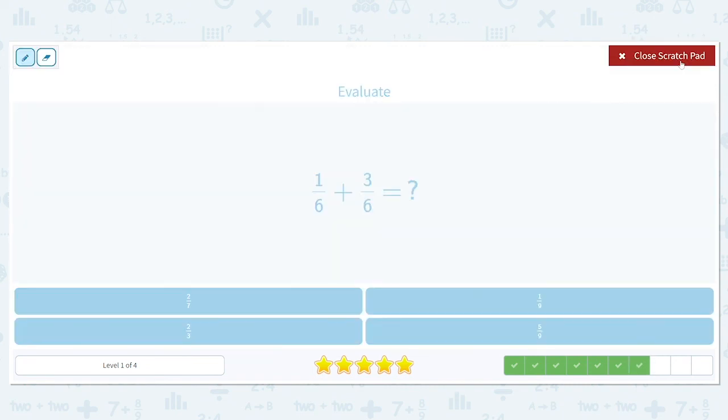One sixth plus three sixths. Add those numerators together. One plus three is four over six. Hmm, but that's not an answer choice. Two sevenths, one ninth, two thirds, and five ninths. Did we do our work correctly? We kept our denominators the same, so that part's correct. And one plus three is four, so that must mean we need to simplify. Both four and six have a factor of two, so we can divide the top and the bottom by two, which gives us two thirds, which is one of our answer choices.